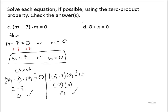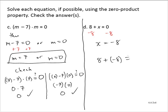Exercise D: 8 plus x is equal to 0. We can't use the zero product property here because it's not written as a product. This is a linear equation, and we learned how to solve linear equations in a previous chapter. All we do is subtract 8 from both sides, giving us x equals negative 8. Checking: 8 plus negative 8 equals 0. Yes, it does. So x equals negative 8 is the solution.